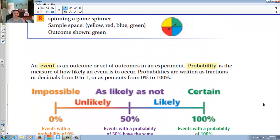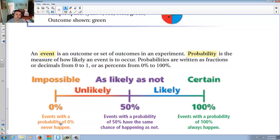An event is an outcome or set of outcomes in an experiment. Probability is the measure of how likely an event is to occur. Probabilities are written as fractions or decimals from zero to one. In other words, zero percent to 100 percent likely. So zero percent is impossible, 100 percent is certain. Fifty percent is as likely as it is not, so even money. Unlikely is closer towards impossible, and likely is closer towards certain.